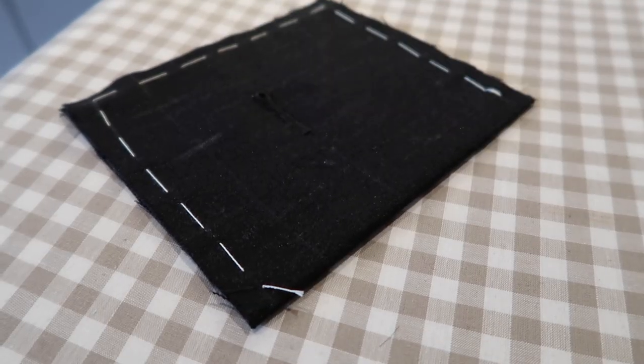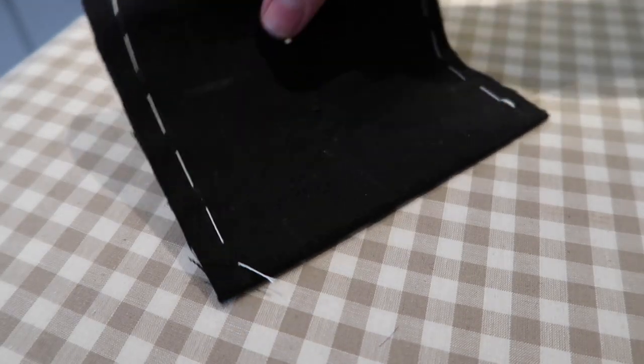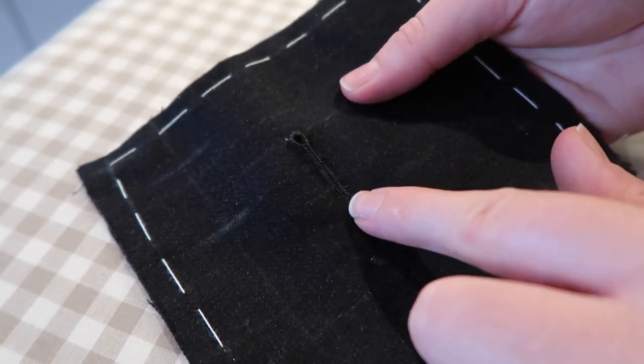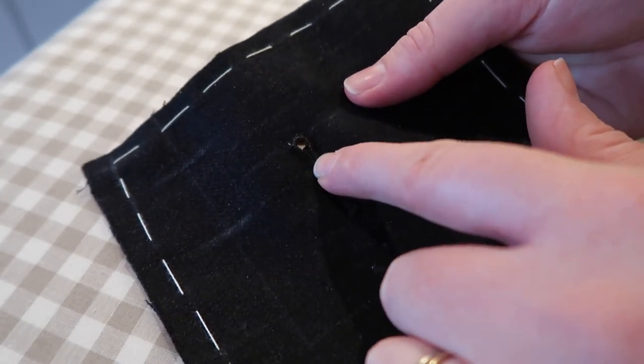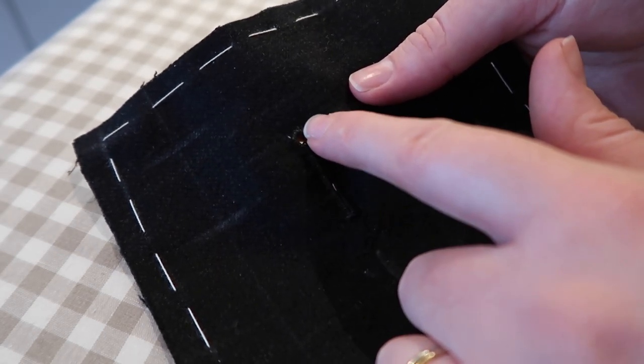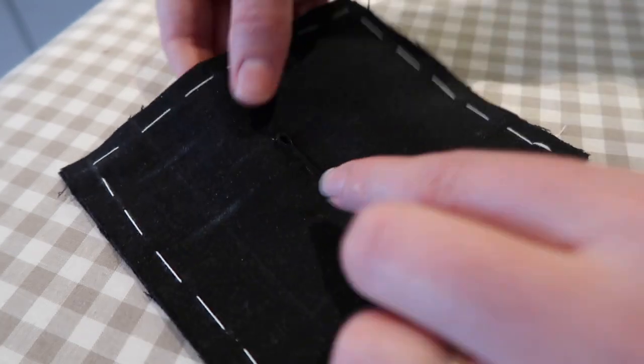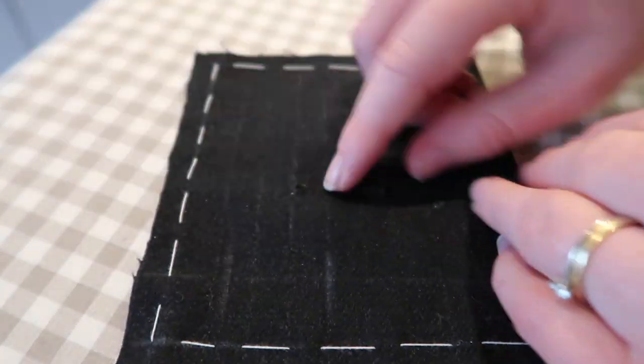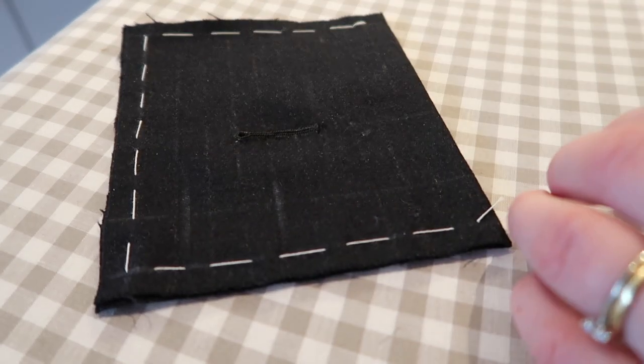When you're pressing or ironing your buttonhole flat, what you want to do is you actually want to flatten this part all the way up to the end, but not this part here. This part you want to have stick out, so you would like to have it come out on the top. But this part you will want to iron flat, like this.